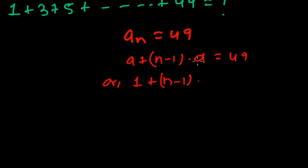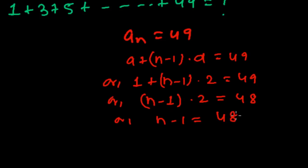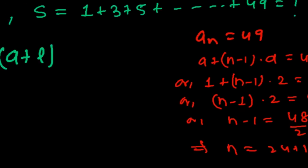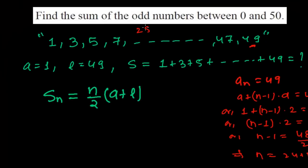The common difference I know is 5 minus 3, that's 2. So 1 plus n minus 1 times 2 equals 49. Or n minus 1 times 2 equals 48. Therefore n minus 1 equals 48 divided by 2, that is 24. Therefore the value of n equals 24 plus 1 equals 25. So in this sequence there are 25 terms.